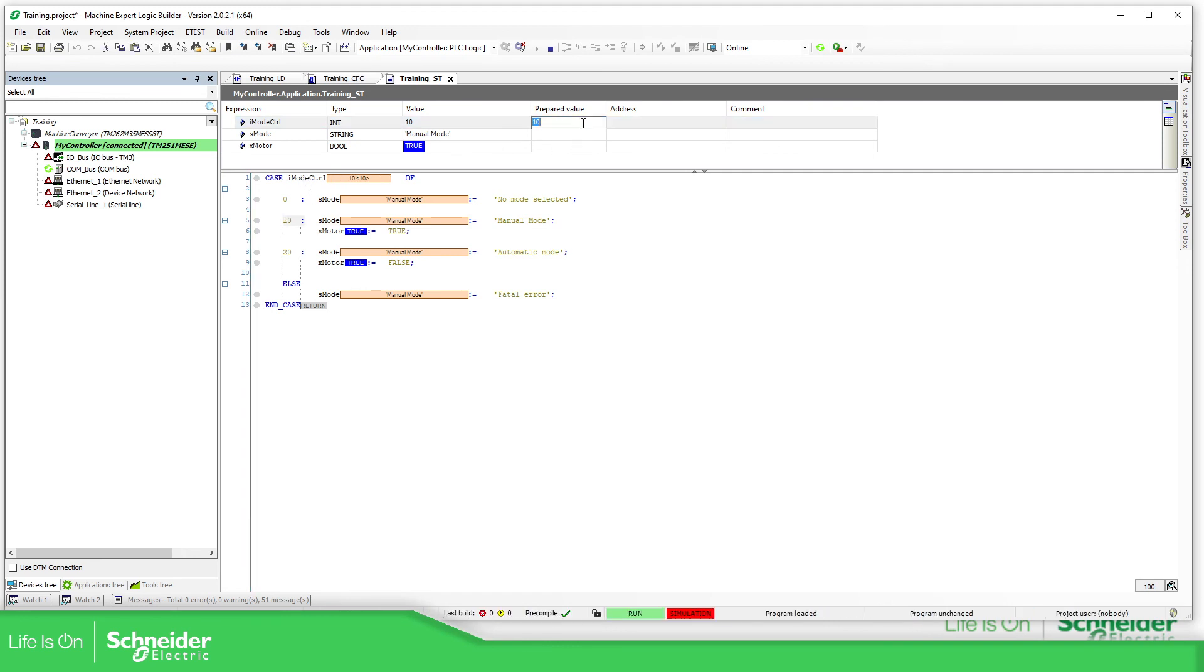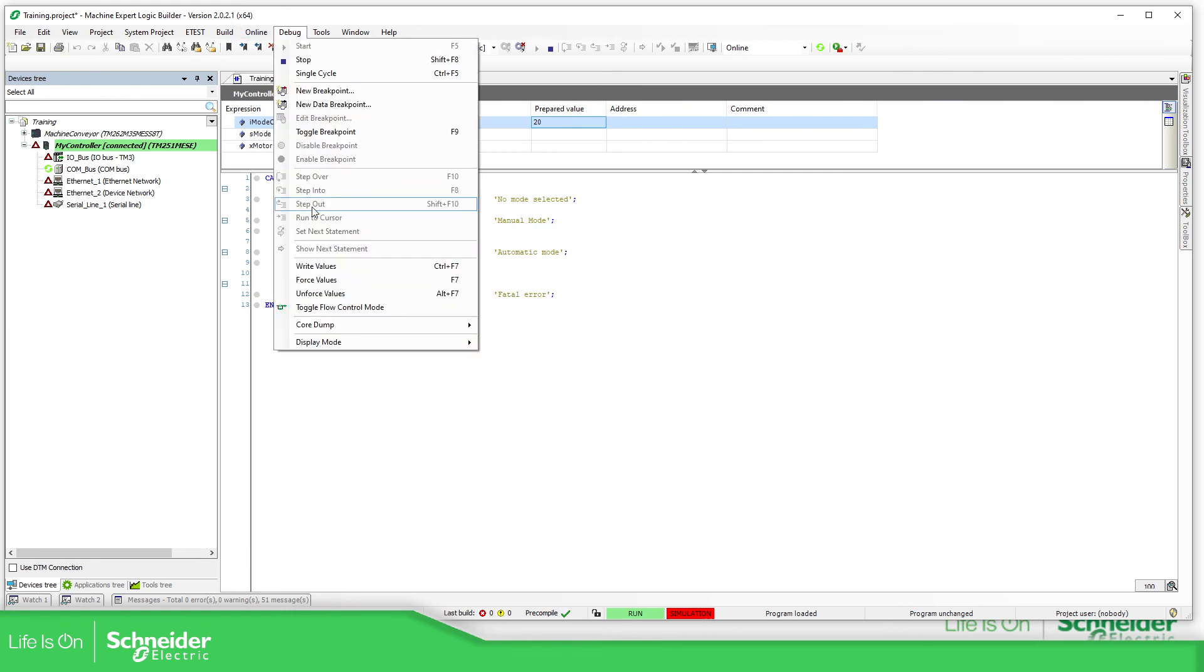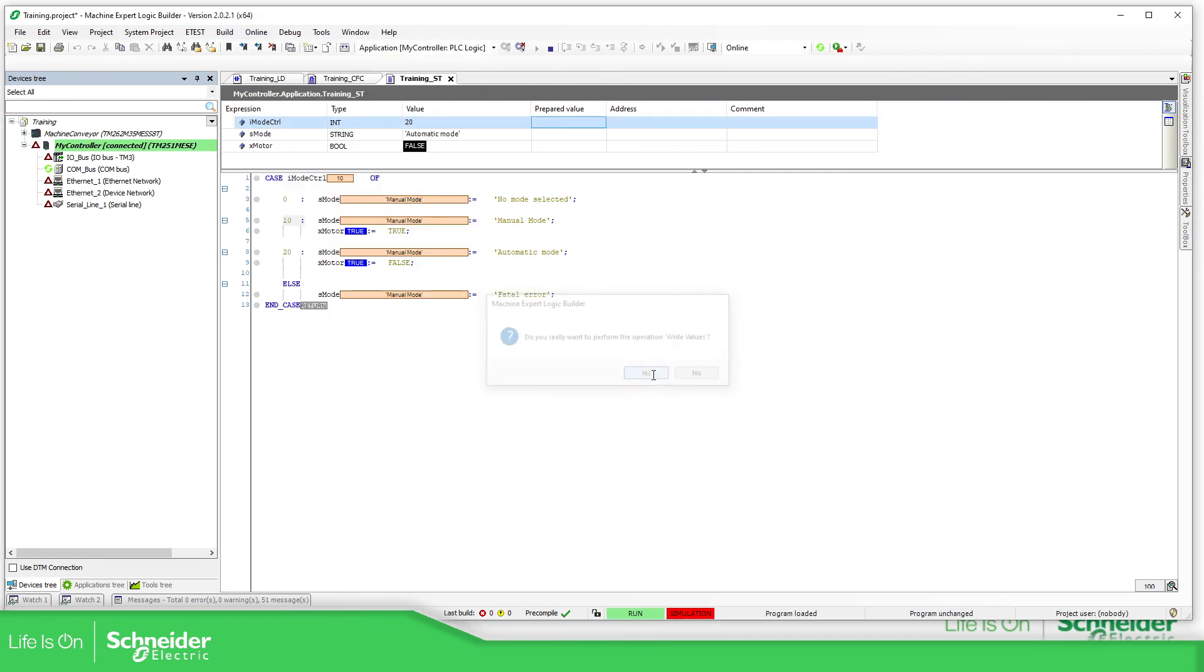if I press 20. Debug. Write values. Here. Automatic mode. And if I select 78. Debug. Write values. Fatal error is selected.